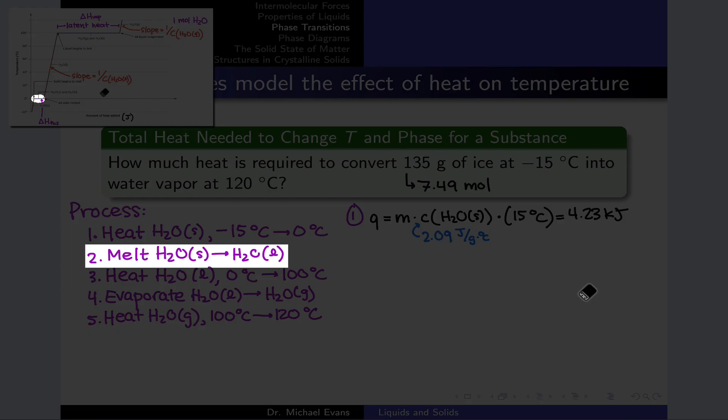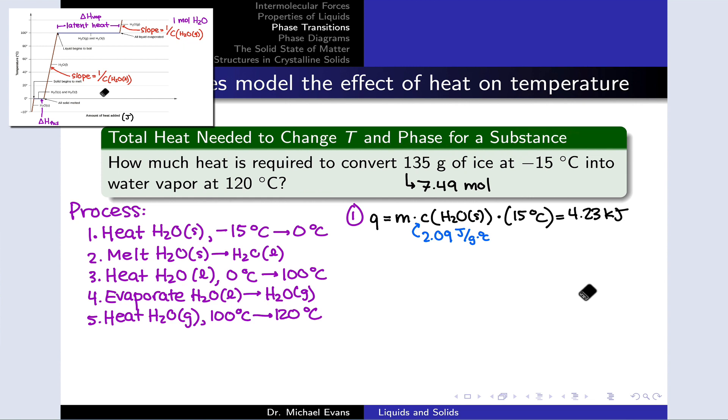Now we're going to melt that solid to liquid. How much heat does that take? Well, I know the enthalpy of fusion. I know how much heat is required to melt a mole of substance. How much is required to melt 7.49 moles? I simply take that enthalpy and multiply by 7.49 moles. So, number of moles times the enthalpy of fusion, which is a molar quantity, kilojoules per mole, gives me 45 kilojoules to melt that ice to water. About 10 times as large as the heat required to go from negative 15 to zero degrees C.